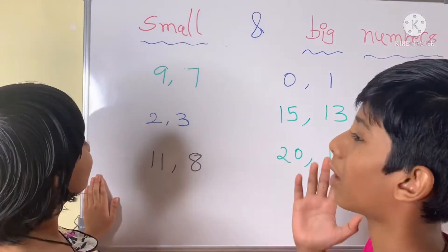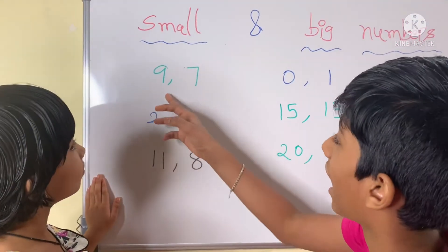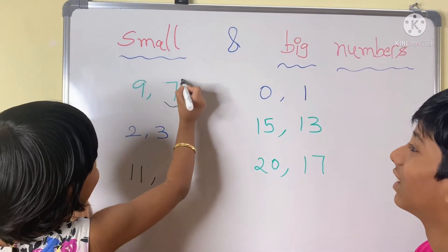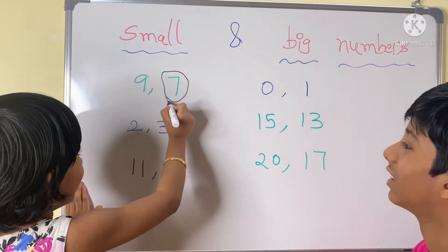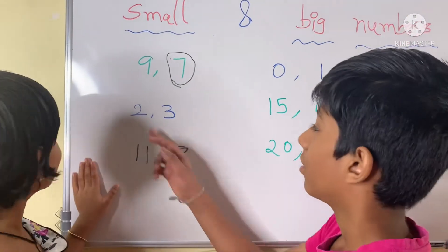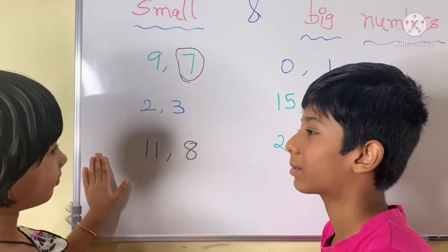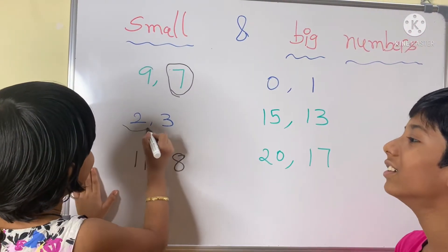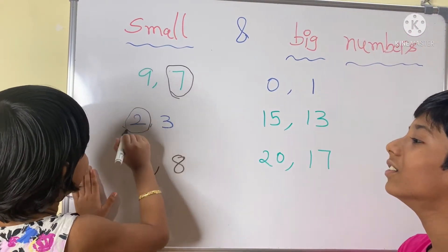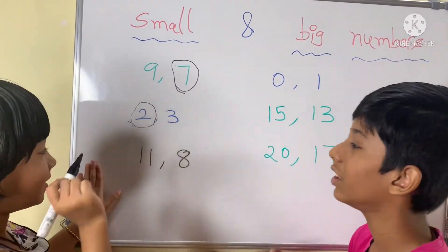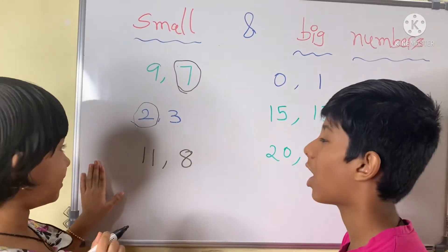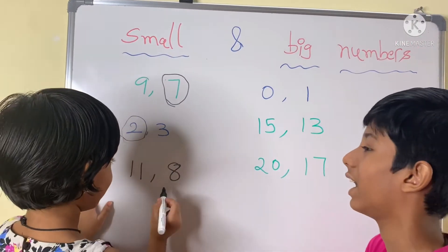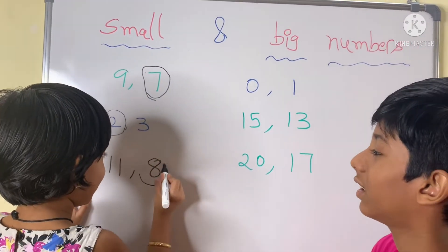Which is the small number — 9 or 7? Seven. Which number is small — 2 or 3? Two. Which number is small — 11 or 8? Eight.